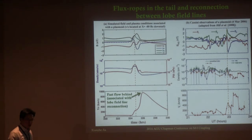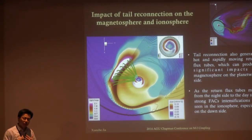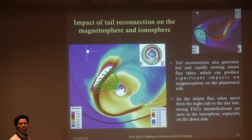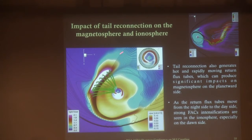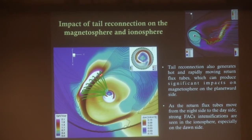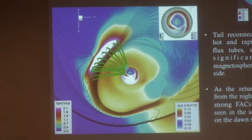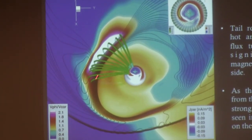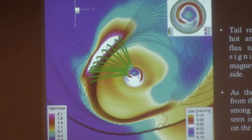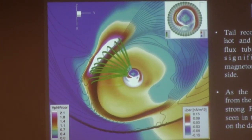The reconnection we see in the tail releases and accelerates the plasmoids down tail, but it also produces a significant impact to the inner magnetosphere and to the ionosphere. The return flows coming back from the tail, arising from the same reconnection event, produce an enhancement in the upward field-aligned currents on the dawn side when mapped to the ionosphere. Those could be well related to some of the events we see in aurora observations — sometimes you see a dramatic dawn-side enhancement and brightening in auroral emissions.